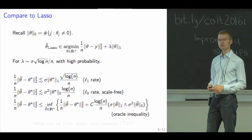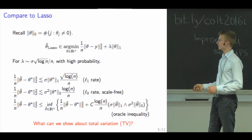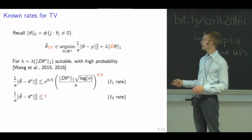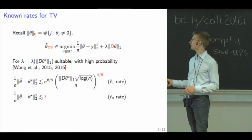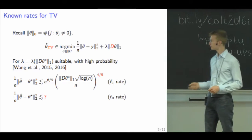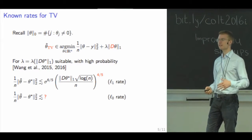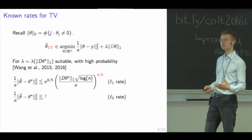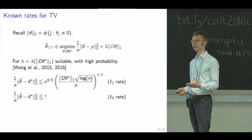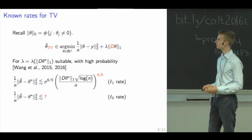For total variation denoising, the best available results so far have a rate of n to the minus four-fifths, and the tuning parameter has to depend on the data complexity, which we do not want in practice.